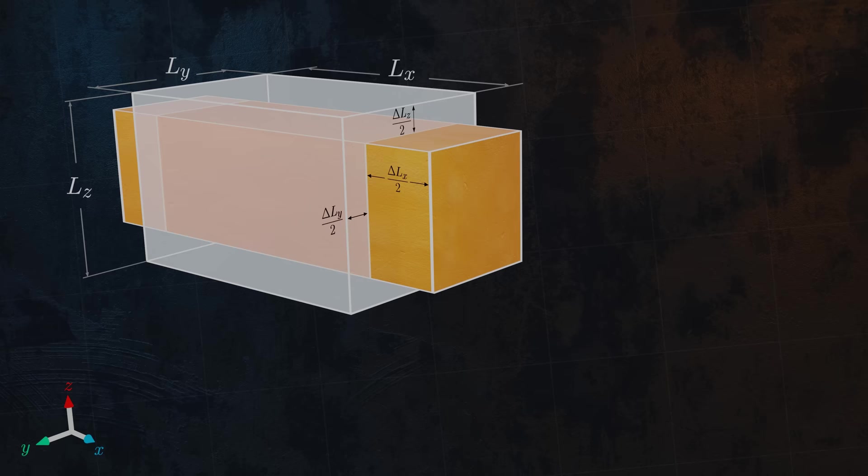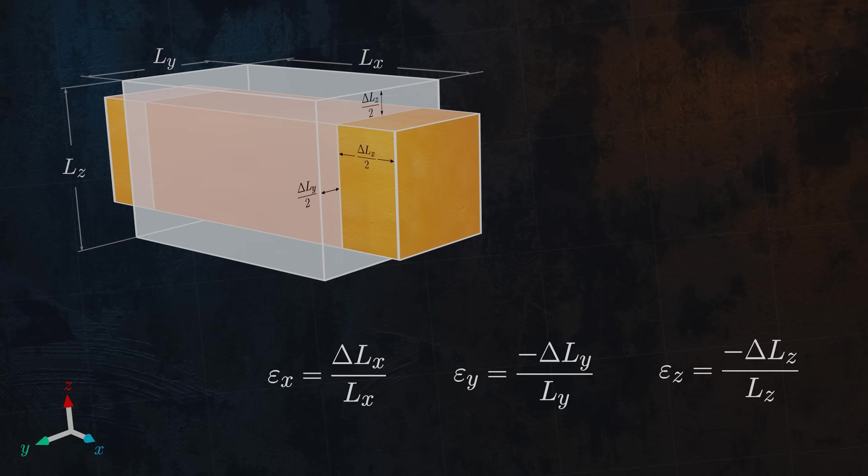Next, we can write out the strains in all three directions. As a quick reminder, strain is a measure of deformation and is defined as the change in length divided by the original length. It is denoted using the Greek letter epsilon and is usually expressed as a percentage.